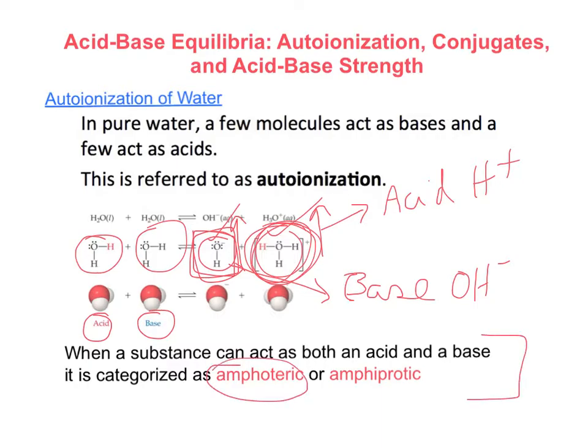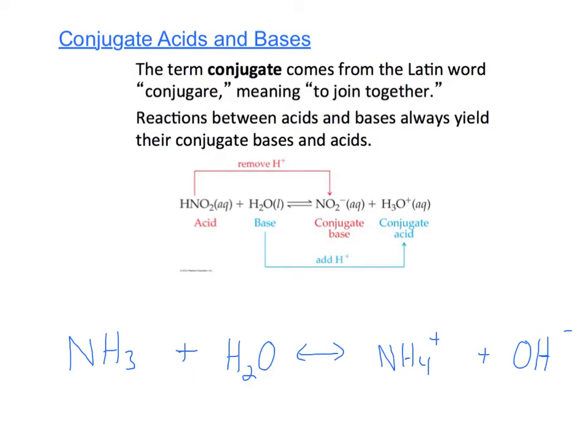When acids and bases react together they form something called conjugate acids and conjugate bases. The term conjugate comes from the Latin meaning 'to join together.' Reactions between acids and bases always yield their conjugate bases and acids.